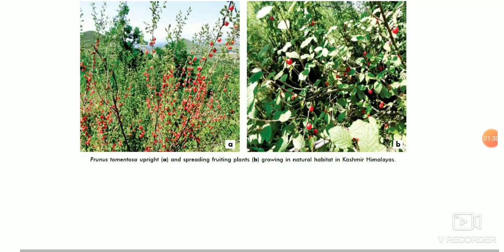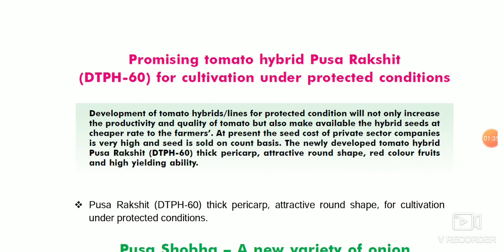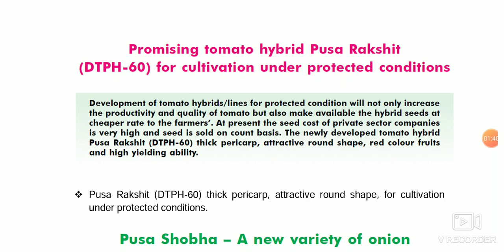See the picture of Prunus tomentosa. Now coming to the next — a new variety of tomato, Pusa Rakshid, which is suitable under protected cultivation. The important characteristic of this variety is thick pericarp and round-shaped fruit. Varieties with thick pericarp have long shelf life.